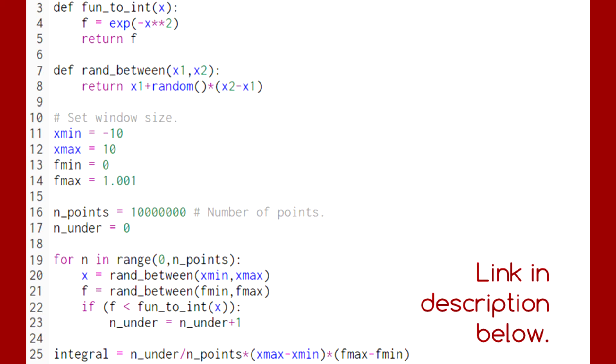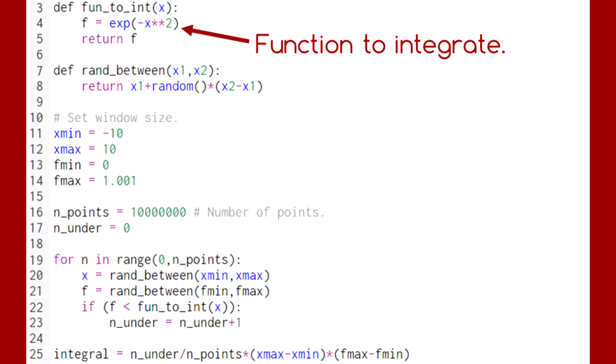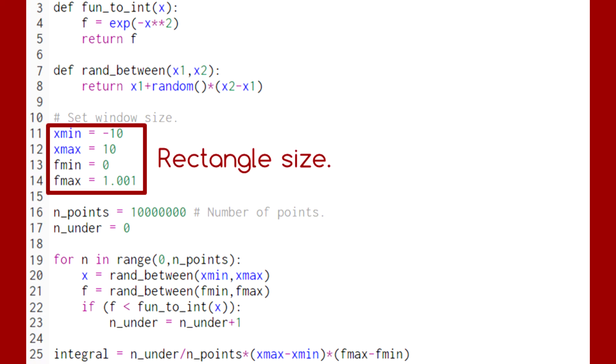In this code, which is available in a link in the description below, we are using the Monte Carlo method to evaluate the integral of e to the negative x squared from negative 10 to 10. Here, we set the size of our rectangle. The minimum and maximum values for x are the integration bounds, and the minimum and maximum values for f encompass the function we're integrating.